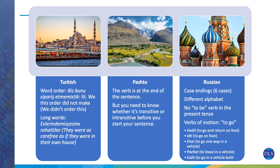Here are a few examples of some challenging elements of certain languages. Turkish is a Category 3 language on the FSI scale of difficulty. The word order is almost totally different from English — for instance, 'biz bunu sipariş etmedik' means 'we didn't order this,' but the verb comes at the end. Turkish also has very long words — a phrase like 'they were as comfortable as if they were in their own house' can be expressed in just two Turkish words.